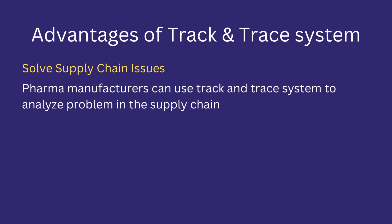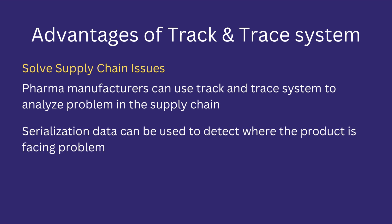Solve supply chain issues: pharma manufacturers can use a track and trace system to detect and solve issues related to the supply chain, because the system enables the organization to check the stage at which a product is stuck or is facing difficulty.